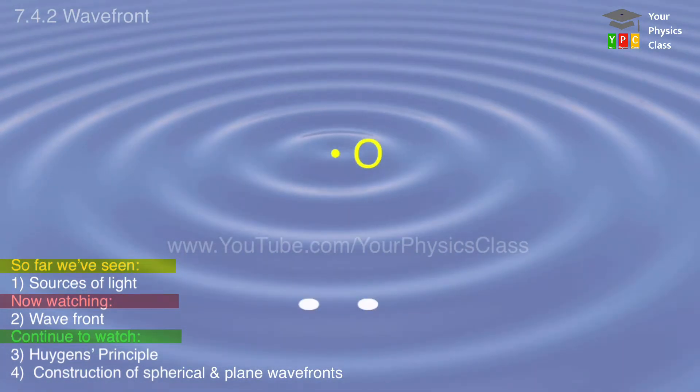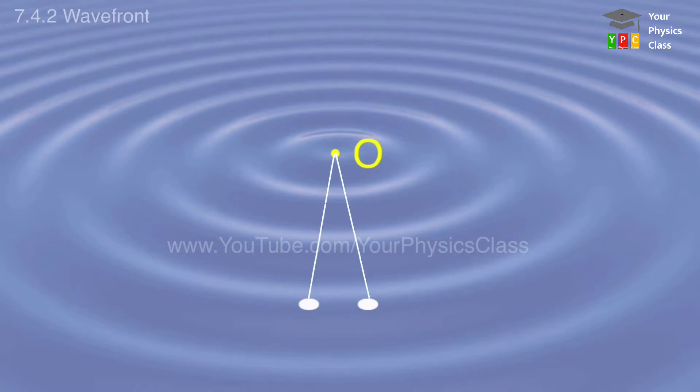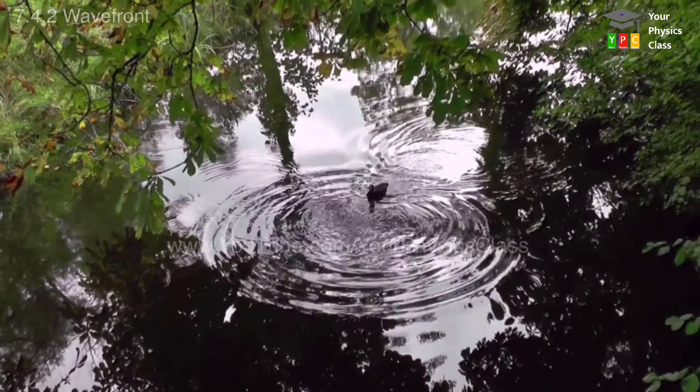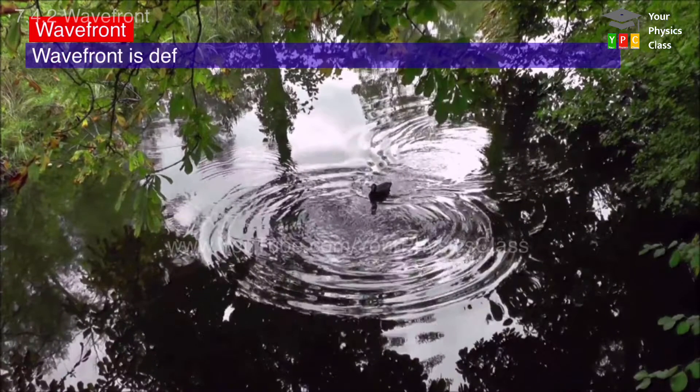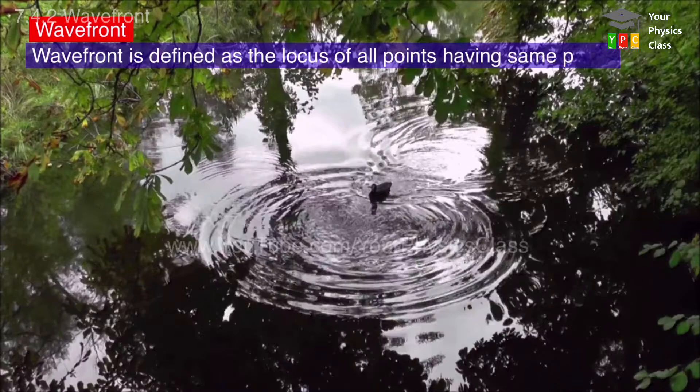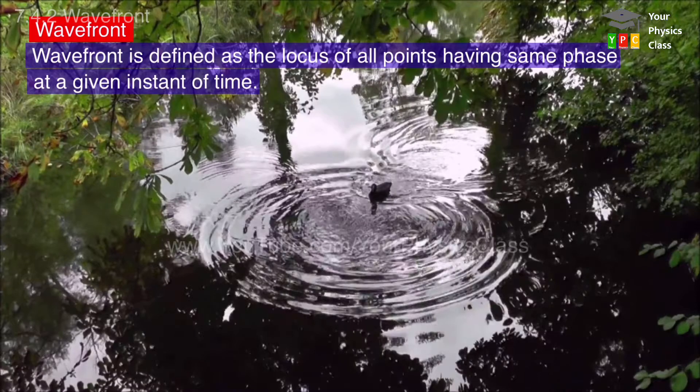Same phase means that these two particles are equidistant from source point O, and their velocity and direction of motion are same. The wavefront of a wave is defined as the locus of all points having same phase at a given instant of time.